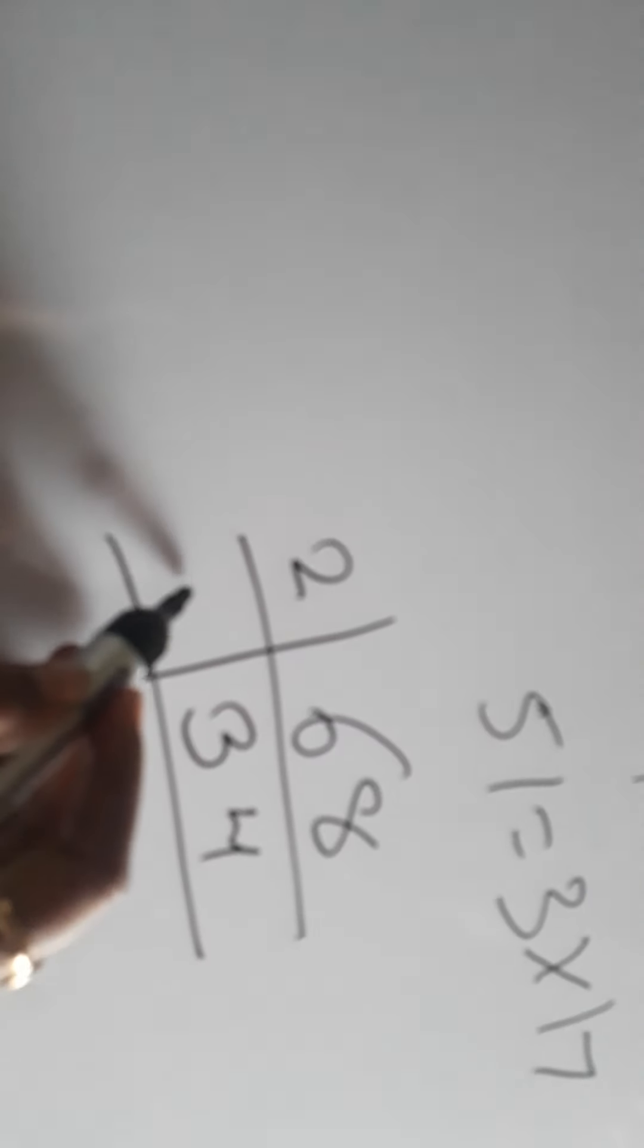Again 2. 2 1s are 2, 1 carried. 2 7s are 14. Now 17, as mentioned earlier, is a prime number, and as you know 17 ones are 17.